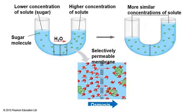On the left side with lower solute concentration, there are fewer sugar molecules, so there are more water molecules. On the right side with higher sugar concentration, most of the space is taken by sugar solute molecules, so there are fewer water molecules. Water molecules will move following their own concentration gradient — from higher water concentration to lower water concentration — through the membrane.